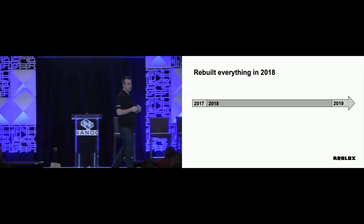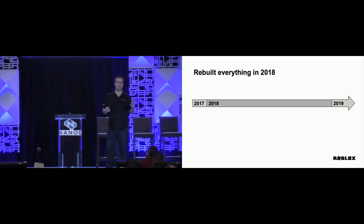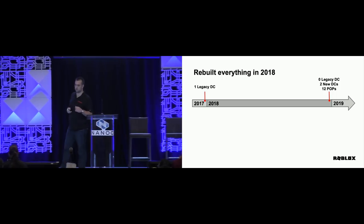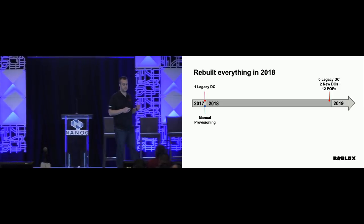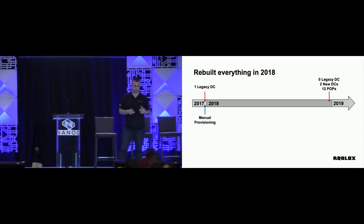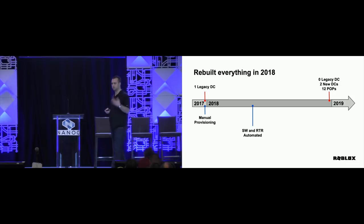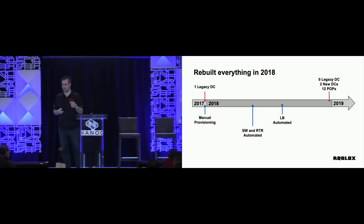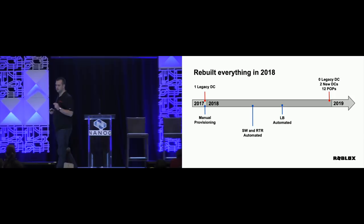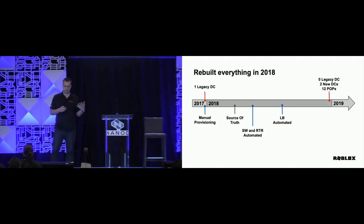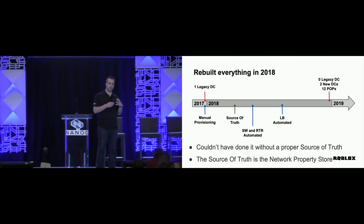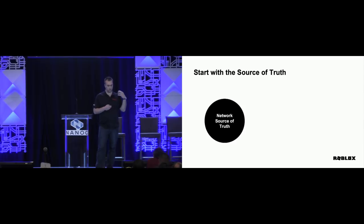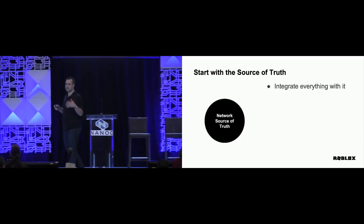2018 was a very interesting year for us because our mission on the network side was pretty much to rebuild everything. We started the year with one legacy layer-2 data center, and the goal sold to the board was to finish the year by replacing those data centers, building two new ones, a global backbone, and 12 PoPs. It was a very small team with pretty much no automation. That's kind of why I got hired, and the team actually went way faster than expected. After only a few months we had switches and routers automated, then we went to the load balancers. But I think the really important decision we made early on was investing in what you call the source of truth — which I call the property store.